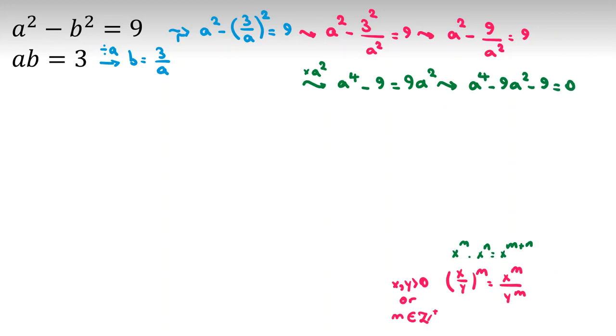Now, this is a quadratic function in terms of a squared. If we consider a squared as c, then we have c squared minus 9c minus 9 equal to 0. And now, for solving this, it is a quadratic function in terms of c. For solving this, we should know. Quadratic formula is what?